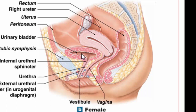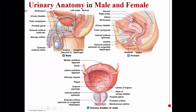Another difference between male and female, besides the female having three openings and the male having just two, is the length of the urethra. In the male the urethra is much longer; in the female it's fairly short. Because of this, females are much more susceptible to urinary tract infections. The anus is not far from the opening of the urethra, so bacteria from the rectum can be spread to the urethra during sexual intercourse or improper wiping. In fact, 40% of women will get a urinary tract infection in their lifetime. For males, it's very difficult for bacteria to travel the full length of the urethra, so UTIs are much less likely.